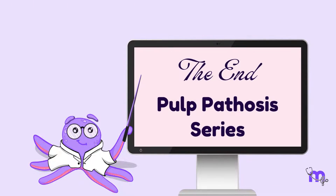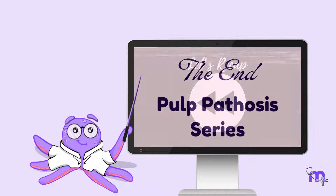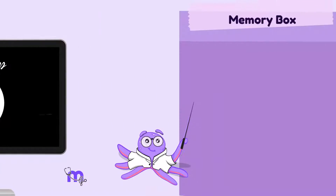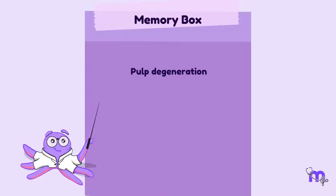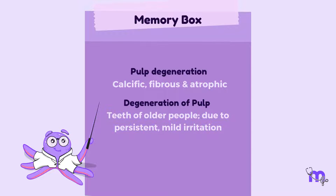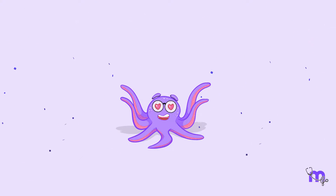With this we come to the end of the Pulp Pathosis series. I hope we can now become experts in diagnosing patients with pulpal pathologies. Before we conclude, let's recap the important points: Pulp degeneration — calcific, fibrous, and atrophic. Pulpal degeneration affects teeth of older people and can also occur due to persistent mild irritation. Necrosis of the pulp — partial or total. We hope you had fun learning with us.